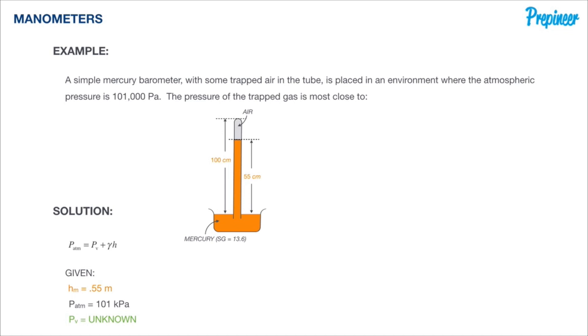Now we almost have everything we need to solve this problem except for the specific weight of the mercury in the barometer. However, knowing that the specific gravity of mercury is 13.6, we can refer back to our specific gravity versus specific weight relationship as shown. So all we need to do is set it up specifically for mercury.